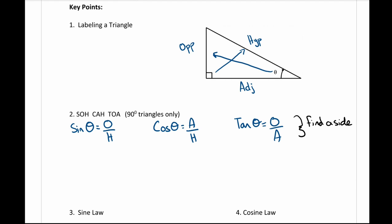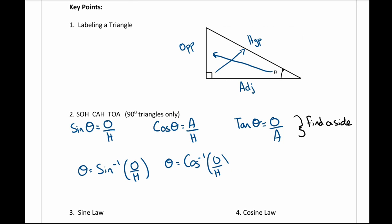If we were finding angles it would use the same ratios, just slightly different. When finding angles we have to use the inverse of our ratios, because when we move that trig ratio across the equal sign it becomes the opposite or the inverse.